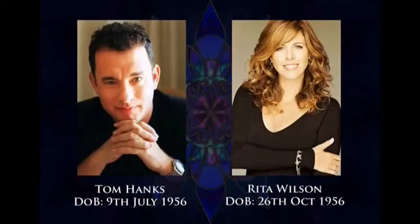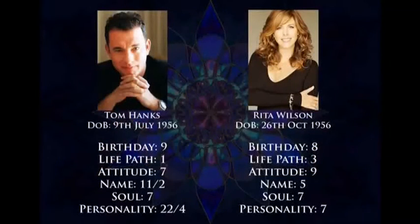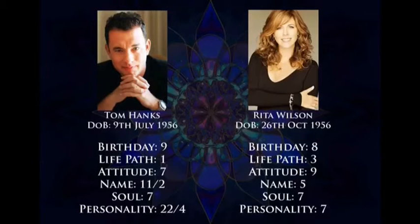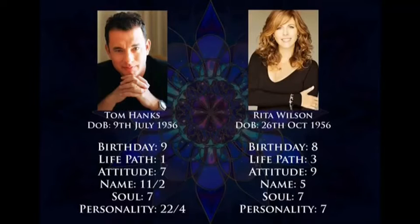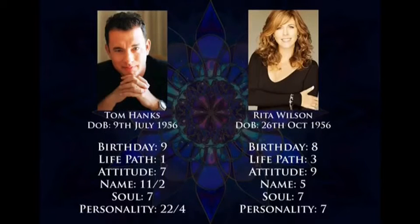We have Tom Hanks and Rita Wilson with their individual data. Tom Hanks is born on the 9th of July 1956 — he is a birthday 9, life path 1, and attitude 7. His name number is 11, which we reduce to 2 for matchmaking purposes. He is a soul urge 7, personality 4, and attitude 7. Rita Wilson is born on the 26th of October 1956 — she is a birthday 8, life path 3, soul urge 7, name 5, personality 7, and attitude 9.